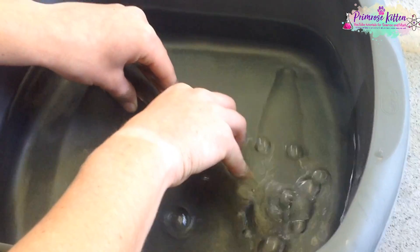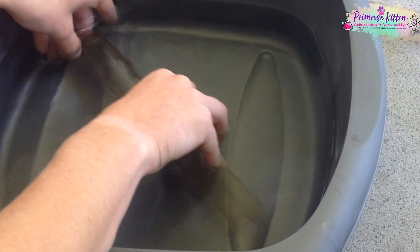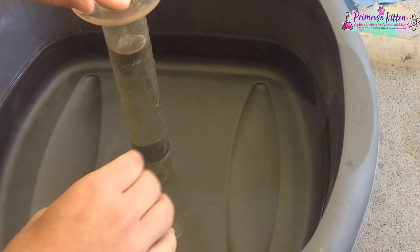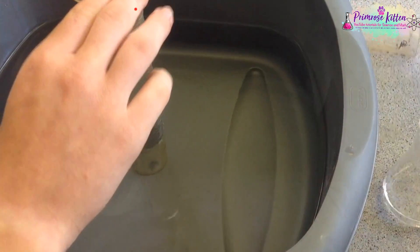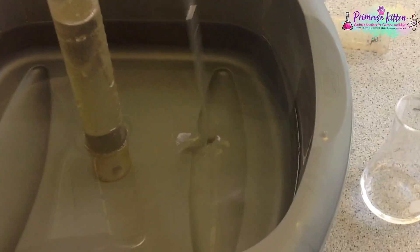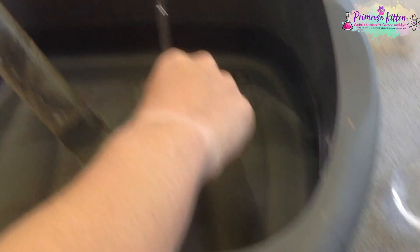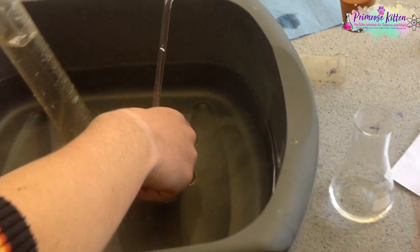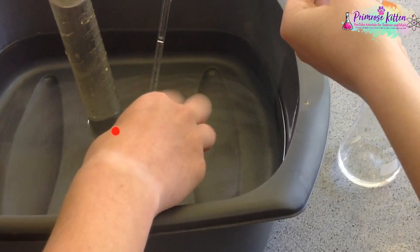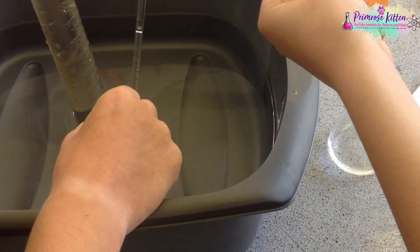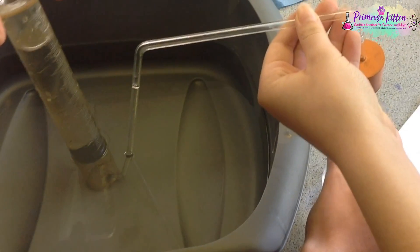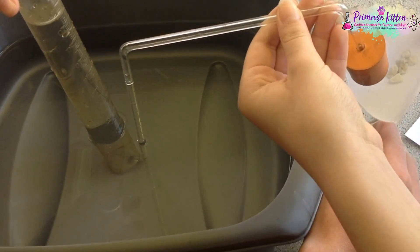One way that we can collect gas is by using an inverted measuring cylinder and putting a delivery tube through there. One of the things you need to be careful about is this gas in here that is already in the measuring cylinder before you start the experiment. That is one place that errors can be introduced. The gas is gonna move from the conical flask through the delivery tube and into the measuring cylinder and it's gonna be collected and we can measure it.